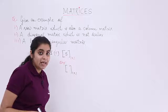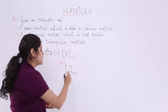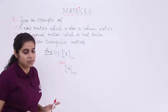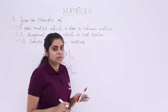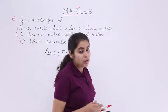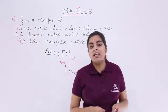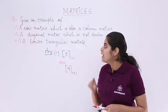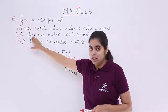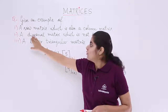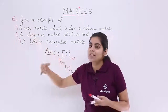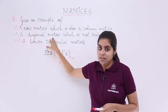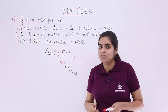One may write it as 9 or any other element — any example can work here. This part is clear, the first part is done. Now what about the second part? The second part expects me to give an example of a diagonal matrix.